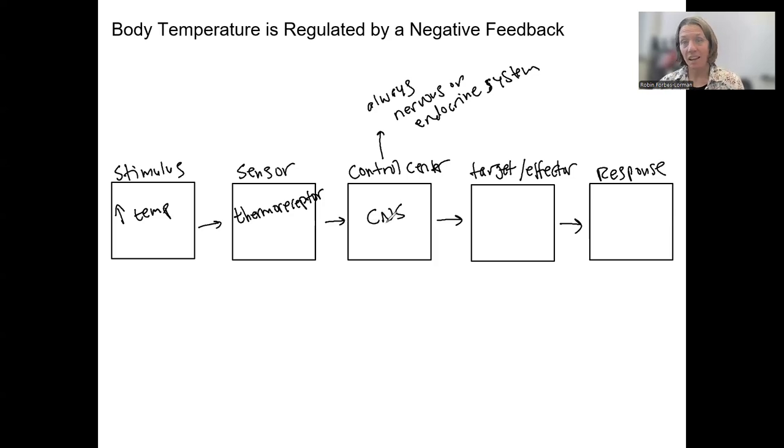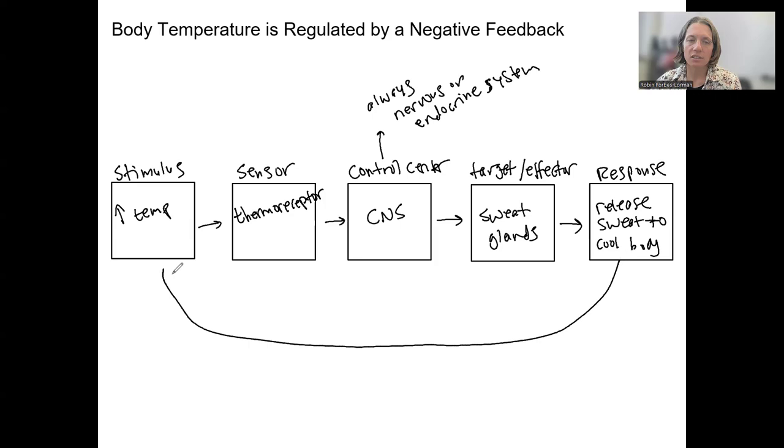Central nervous system can decide, oh, temperature is off from my set point. Let's send an output signal to what? Well, several things. One would be sweat glands. What are they going to do? They're going to release sweat to cool the body. That response is counteracting our stimulus and turning off our system. That's negative feedback.